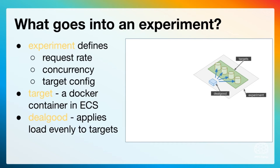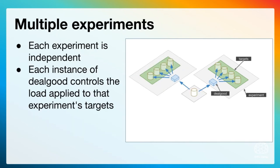There's a component called DealGood. DealGood applies load evenly to the targets and is designed to fire requests at a certain rate, capture the metrics on the results, and ensure that everything runs smoothly. We can have multiple experiments running at the same time because they are designed to be independent, and each experiment has its own instance of DealGood which controls the load for that particular experiment.